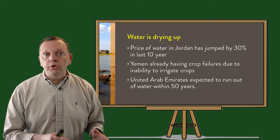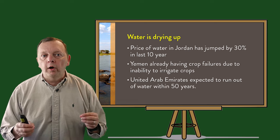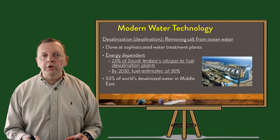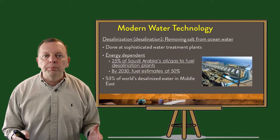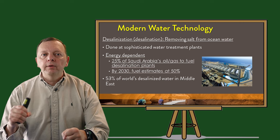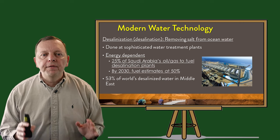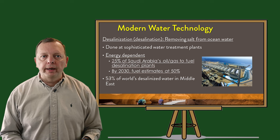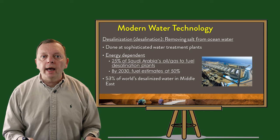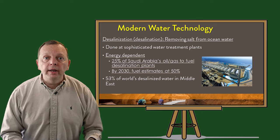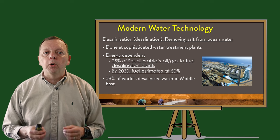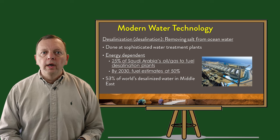Yemen is already suffering crop failures as water is unavailable for farming, and even the wealthy United Arab Emirates is estimated to run out of water in the next 50 years. One solution is desalination plants — 70% of the world's desalination plants are found in the Middle East. Today, 50% of Saudi Arabia's drinking water comes from these plants. However, they require enormous energy: 25% of Saudi Arabia's oil and gas is used to run them, and by 2030 some estimate 50% of Saudi Arabia's oil will be used to create drinkable water. Water is literally becoming as valuable as oil in the Middle East.